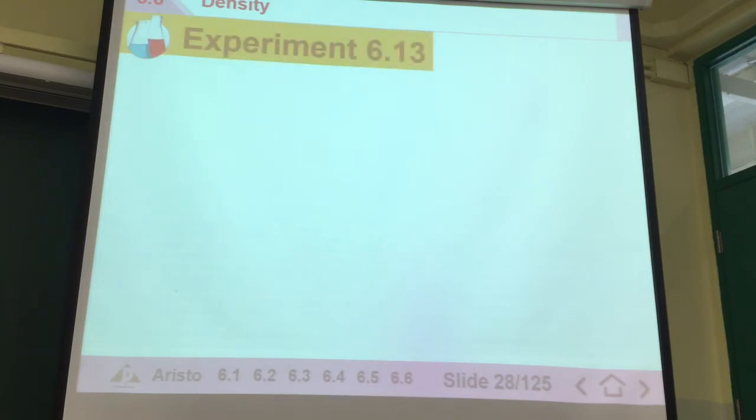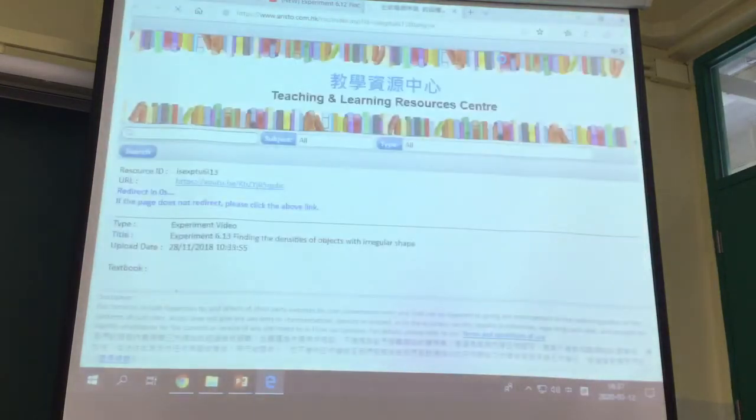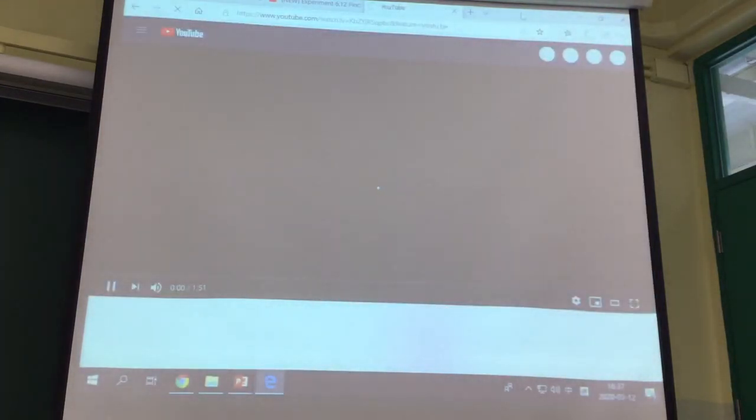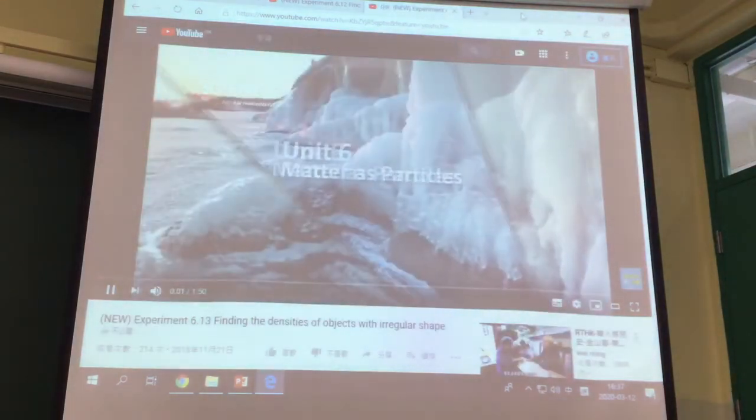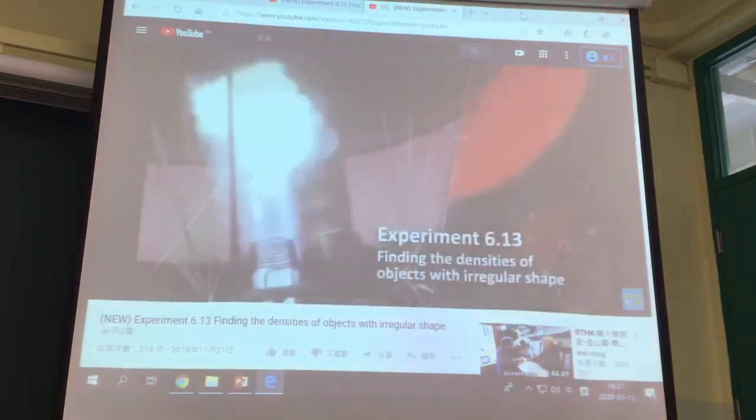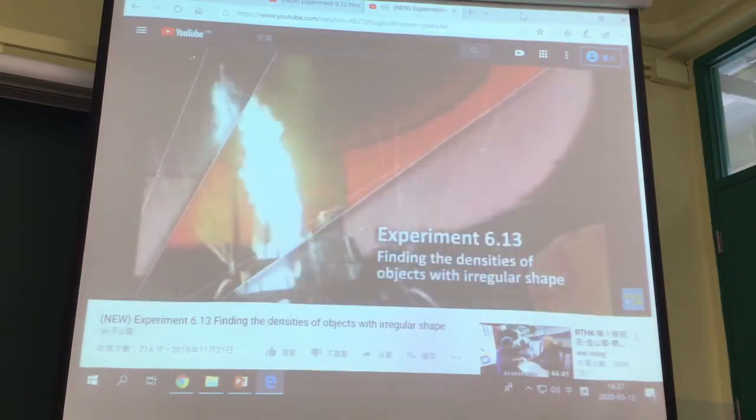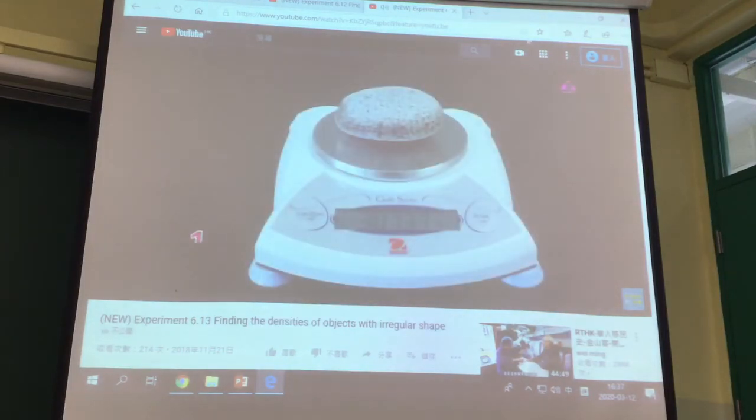Density is equal to mass over volume. If the mass is double, the volume will also need to be double in order to cancel the two on the top and bottom part. Your next experiment is 6.13. It is similar to what you have done in your half-year exercise.